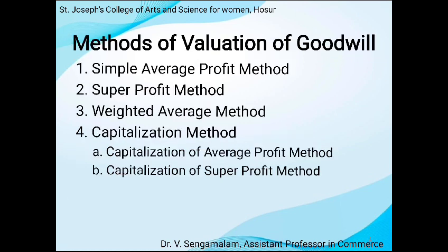Methods of valuation of goodwill. The first one is the simple average profit method. The second one is the super profit method. The third one is the weighted average profit method. The fourth one is the capitalization method, which is classified into two: capitalization of average profit method, and capitalization of super profit method.